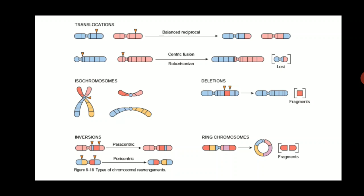A ring chromosome forms when both ends of a chromosome are deleted, the ends become sticky, and they stick to each other forming a ring-like structure. The deleted parts remain as small fragments or are removed from the cell. All these structural abnormalities — balanced reciprocal translocation, Robertsonian translocation, isochromosome formation, deletions, inversions, and ring chromosome formation — do not alter the total number of chromosomes and hence do not alter the ploidy of the cell.